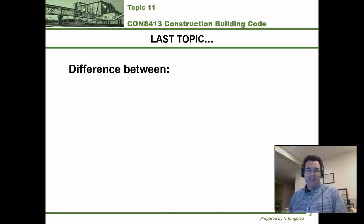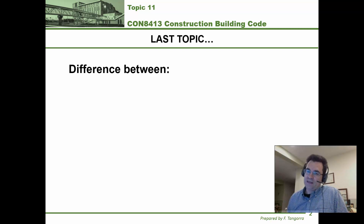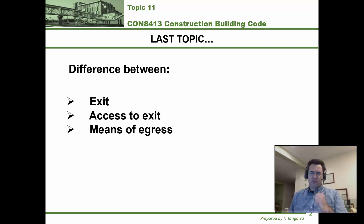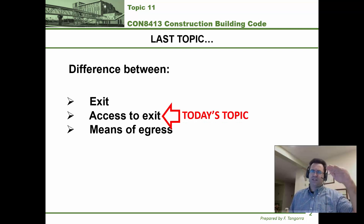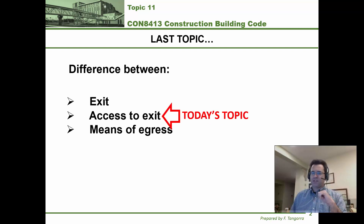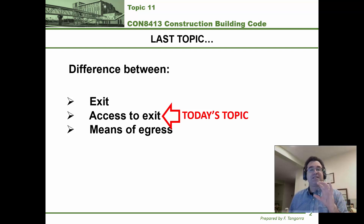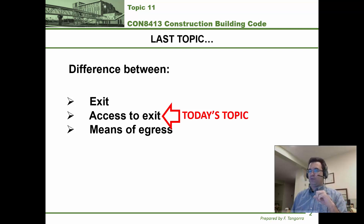What we did in the last topic, topic 10, is look at the difference between three sets of terms: exits, access to exits, and means of egress. Today's topic is access to exit, which is under section 3.3.